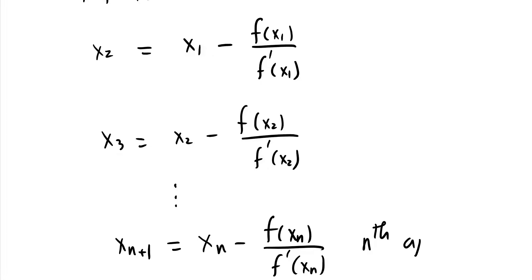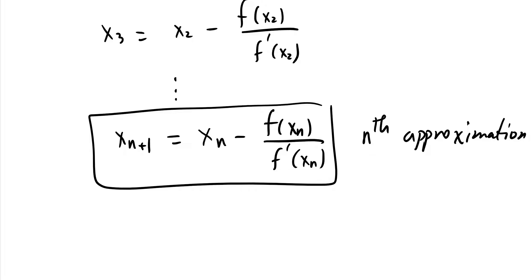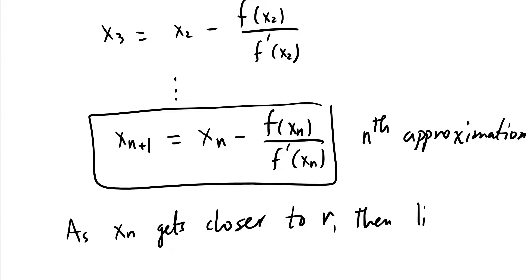This is called the nth approximation. As Newton proved, as x_n gets closer to r, the limit of x_n as n approaches infinity equals r. So as we move through x₁, x₂, x₃, x₄ — each value is better than the previous. Eventually we get very, very close to the root. It's better to approximate than to say we can't solve the equation.